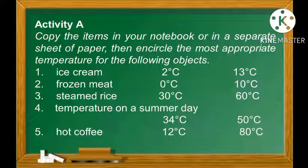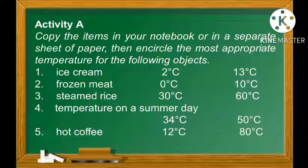Now let's answer Activity A. Copy the items in your notebook or on a separate sheet of paper, then encircle the most appropriate temperature for the following objects. Number 1: Ice cream — 2°C or 13°C? Number 2: Frozen meat — 0°C or 10°C? Number 3: Steamed rice — 30°C or 60°C? Number 4: Temperature on a summer day — 34°C or 50°C? Number 5: Hot coffee — 12°C or 80°C?